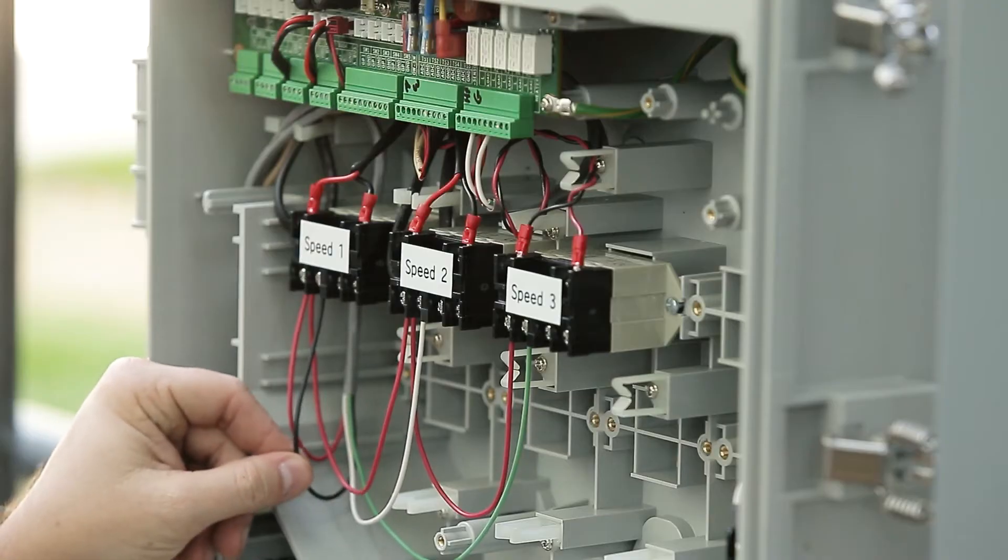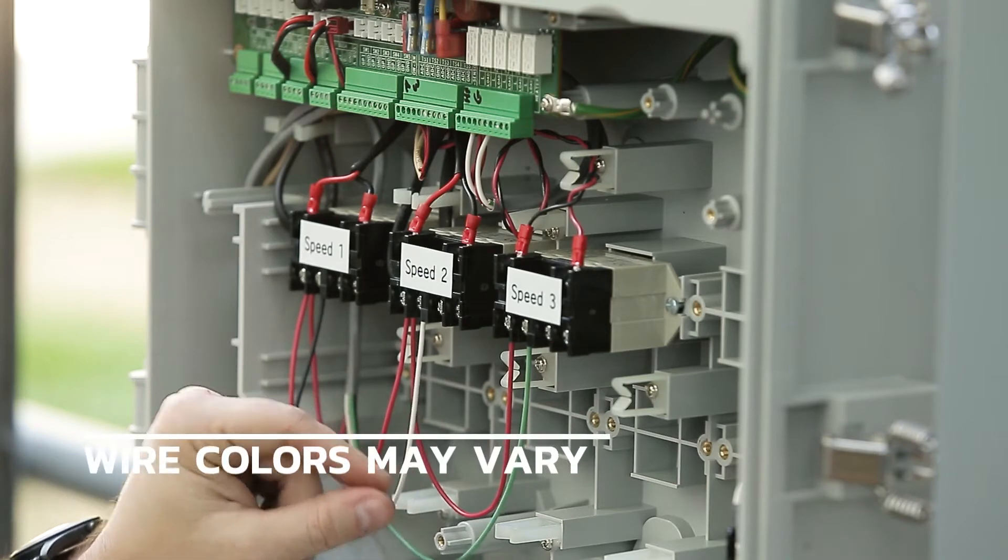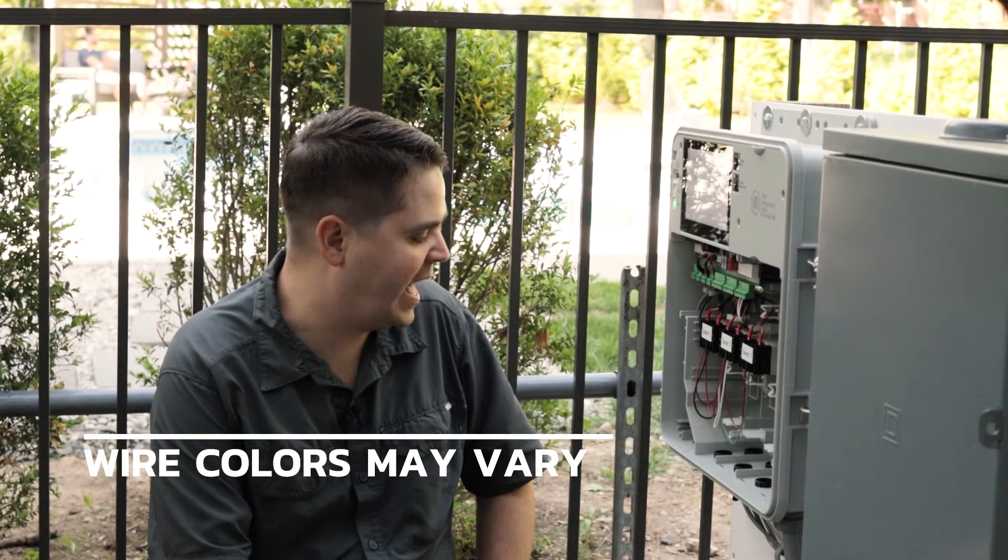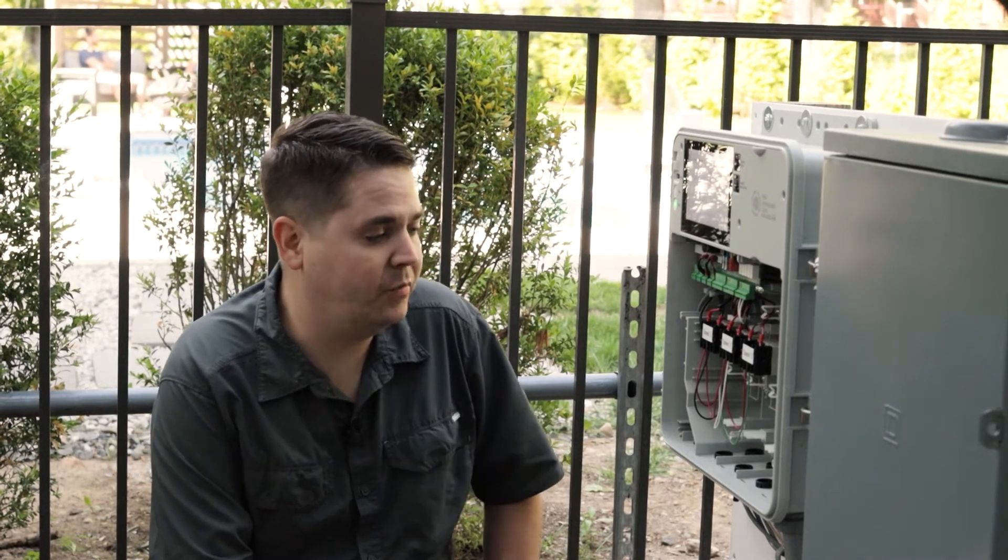And then what we have in here is the black, white, and green wires, which in some of the kits are actually black, white, and yellow. The wiring can vary just a little bit from kit to kit.